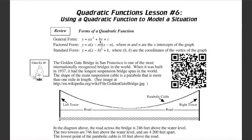General form is nice to find the y-intercept, because if you let x equal zero, you can see that the y-intercept would be zero c. The factored form is useful if you know the x-intercepts of the graph, with m and n being the x-coordinates of the x-intercepts. The standard form, or vertex form, is useful because we can read the vertex right from the equation.